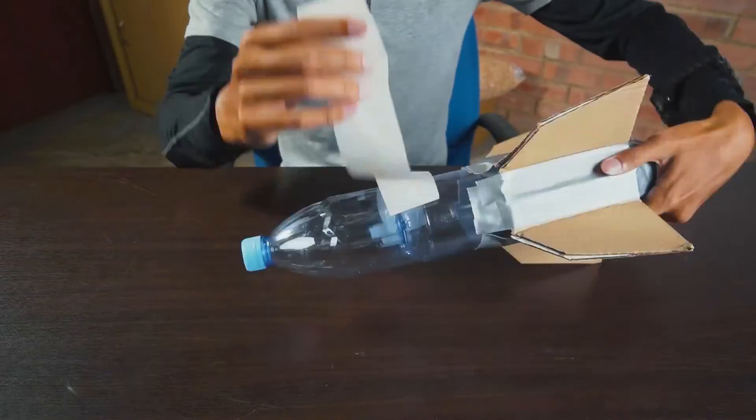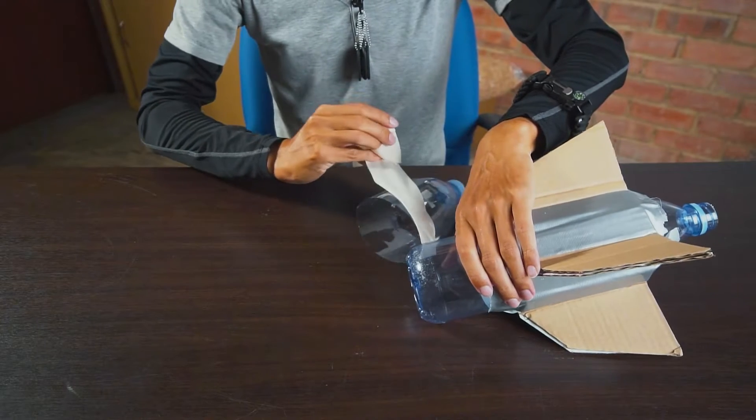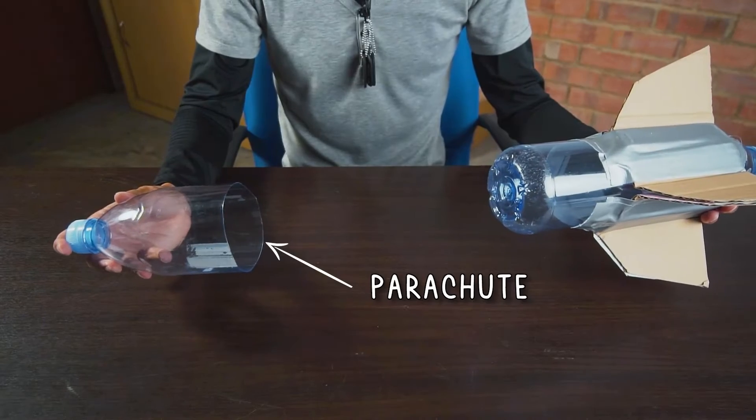First, remove the cone from your water rocket. This is where you will store your parachute before it releases.